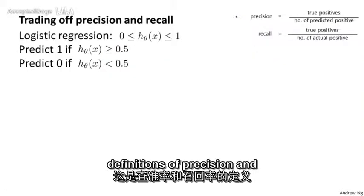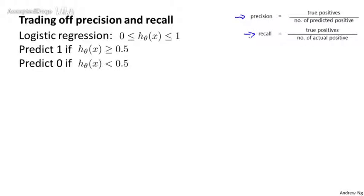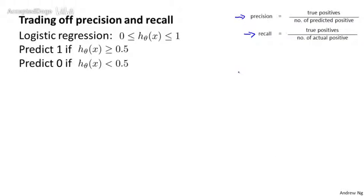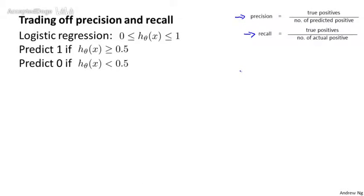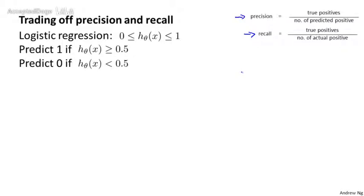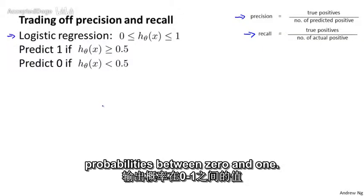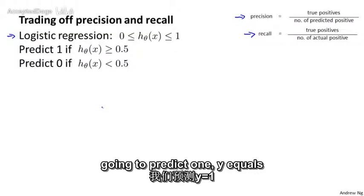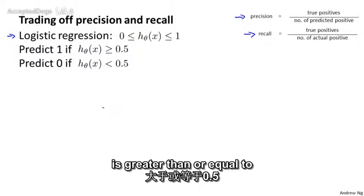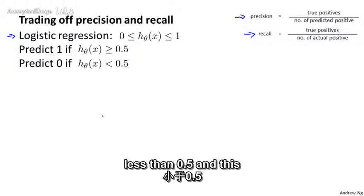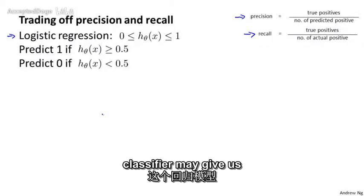As a reminder, here are the definitions of precision and recall from the previous video. Let's continue our cancer classification example where y equals 1 if the patient has cancer and y equals 0 otherwise. Let's say we've trained a logistic regression classifier which outputs probabilities between 0 and 1. We predict y equals 1 if h of x is greater than or equal to 0.5, and predict 0 if the hypothesis outputs a value less than 0.5. This classifier may give us some value for precision and some value for recall.